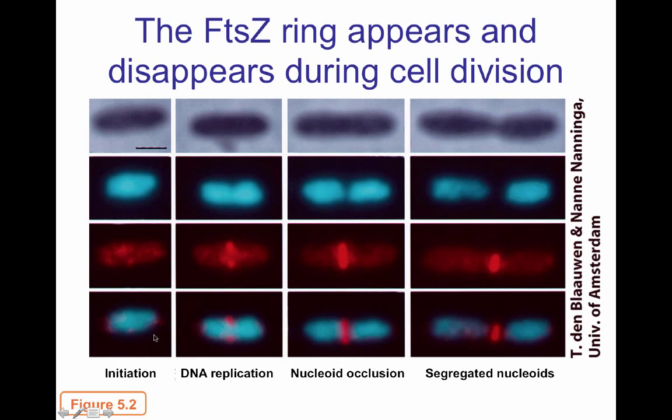What mechanisms tell the cell where the FTSZ ring should be assembled? There are two. Number one is nucleoid occlusion — the DNA forms a physical barrier in the middle of the cell so the FTSZ ring doesn't form. When the DNA in the nucleoid is segregated, that alleviates nucleoid occlusion, allowing formation of the FTSZ ring. The second mechanism involves the Min proteins, which direct the physical location where the FTSZ ring forms. Min D is bound to the membrane and recruits Min C, which directly inhibits FTSZ polymerization.